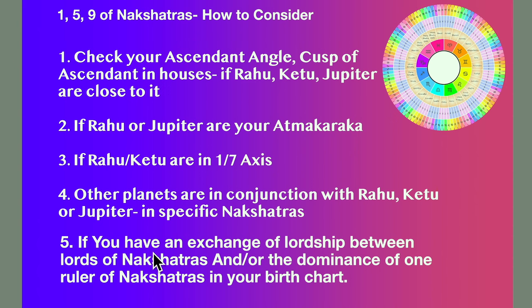And if Jupiter is in that particular nakshatra of Mercury, you've got to check which the ruler of the nakshatra is. We have nine types basically — nine classifications of three nakshatras each, which makes it 27. So let's get into it.